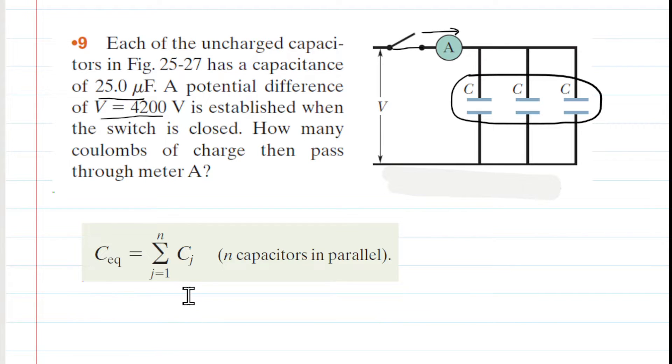We can see from this expression that when you have capacitors in parallel, you can get the equivalent capacitance by simply summing the individual capacitance values. In this case, we have three capacitors, each of which is 25 microfarads. So we're going to add 25 microfarads three times, or alternatively, multiply 3 by 25 microfarads.